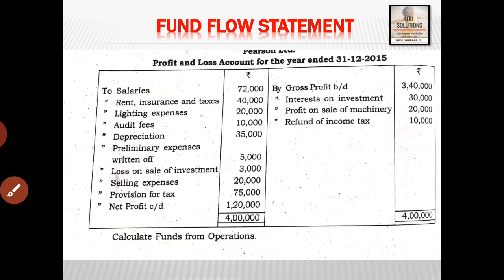Let us go through another example. We have been given a profit or loss account — another model of question. A profit or loss account for a particular year is given and we are asked to calculate fund from operation. When we go through these items, what is the peculiarity? On the credit side there is gross profit. If we are using the direct method, we can start with that. Then interest is non-fund, non-operating income. Profit on sale is non-fund, non-operating income. Refund of income tax is a non-fund, non-operating item.